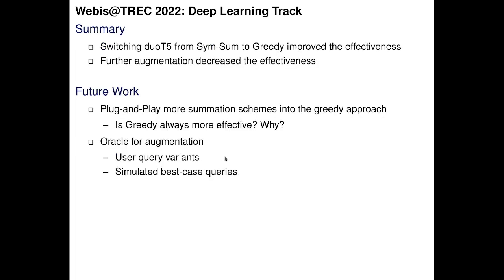To sum everything up: a simple switch in Duo T5 from the symmetric sum to the greedy approach improved effectiveness, but unfortunately our second approach — augmentation — decreased effectiveness. As future work, we would like to plug and play more summation schemes into the greedy approach and check if it is always more effective. We also would not give up on the augmentation approach, and plan to start with oracle augmentations such as user query variants or simulated best-case queries. Thank you for your attention.